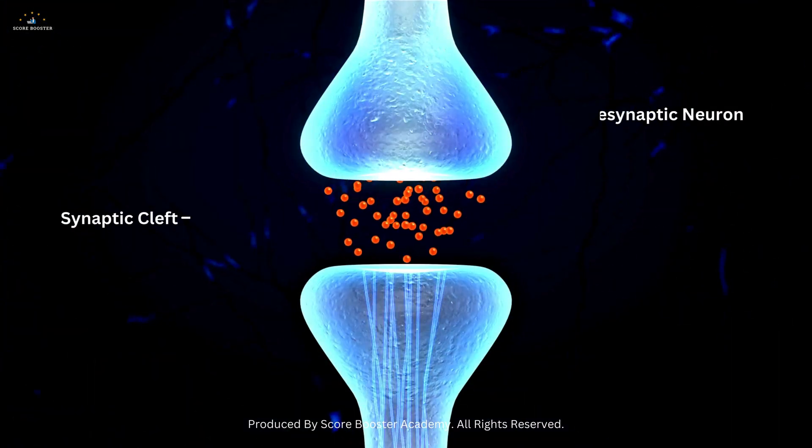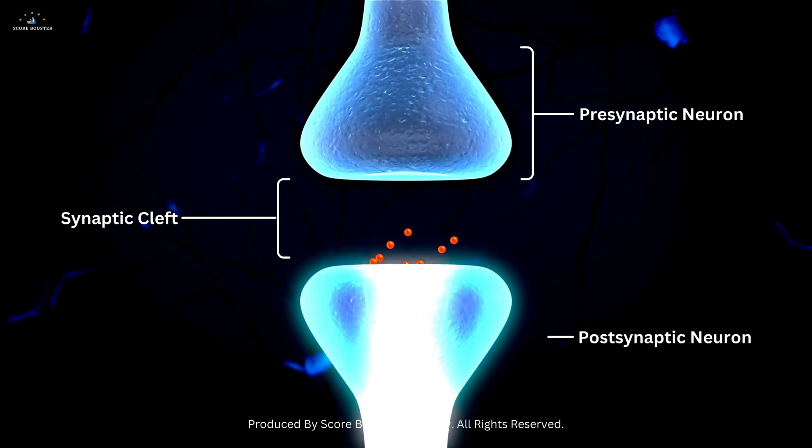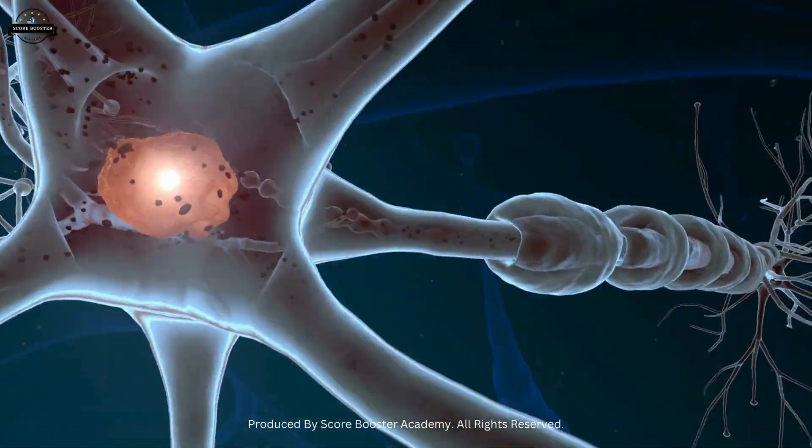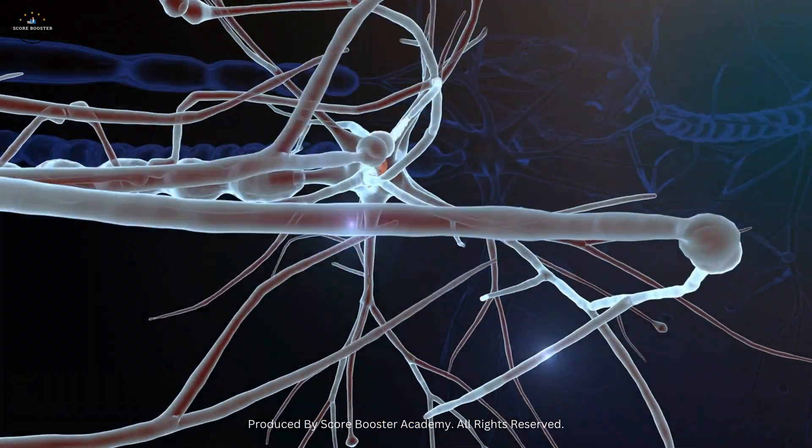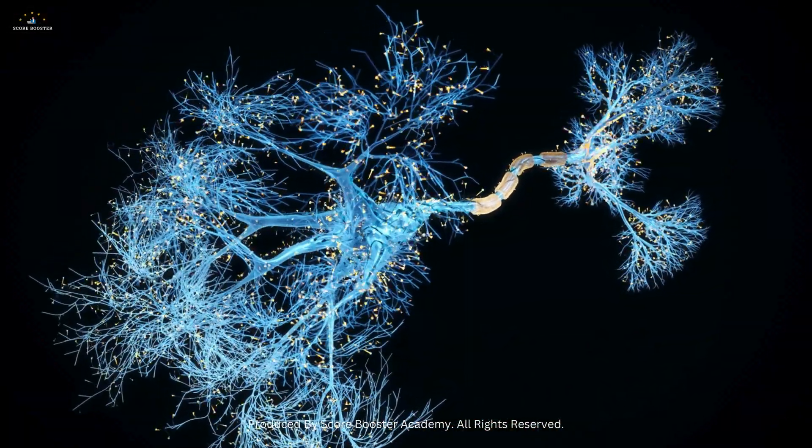When a neurotransmitter binds to its corresponding receptor, it triggers a response in the post-synaptic neuron. This response can either excite the neuron, making it more likely to fire its own action potential, or inhibit it, making it less likely to fire.